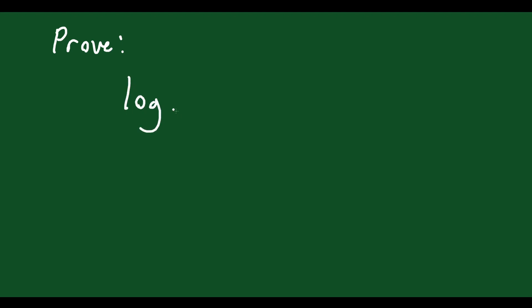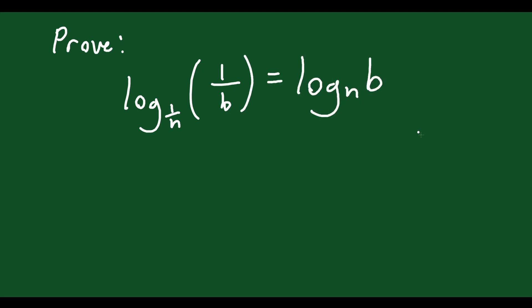Let's do another one. We have to prove that log base (1/n) of (1/b) is equal to log base n of b. We're told that b > 0, n > 0, and n cannot equal 1. These constraints ensure nothing funny happens — you can't have a base of 0 or 1, and you can't divide by 0.